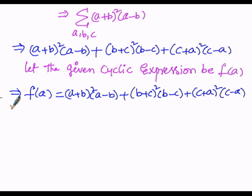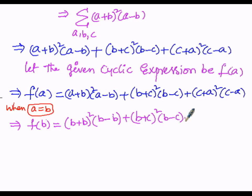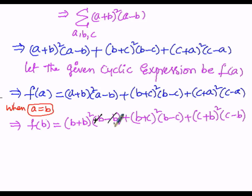Instead of a, we are going to substitute b. When a is replaced by b, f(b) = (b+b)²(b−b) + (b+c)²(b−c) + (c+b)²(c−b). The term (b−b) equals 0, so 0 multiplied by the first bracket gives 0.